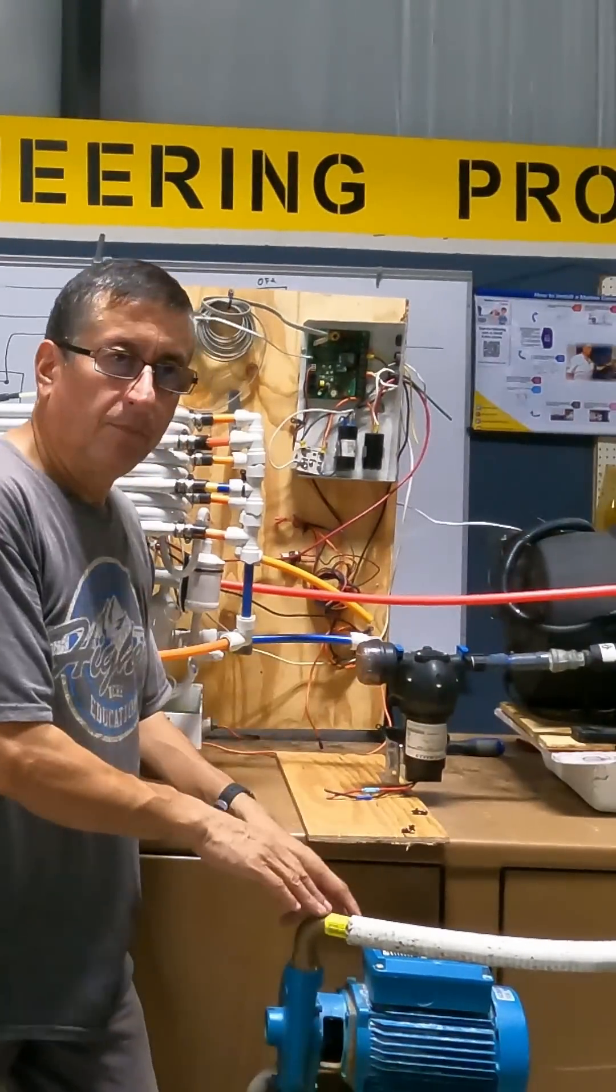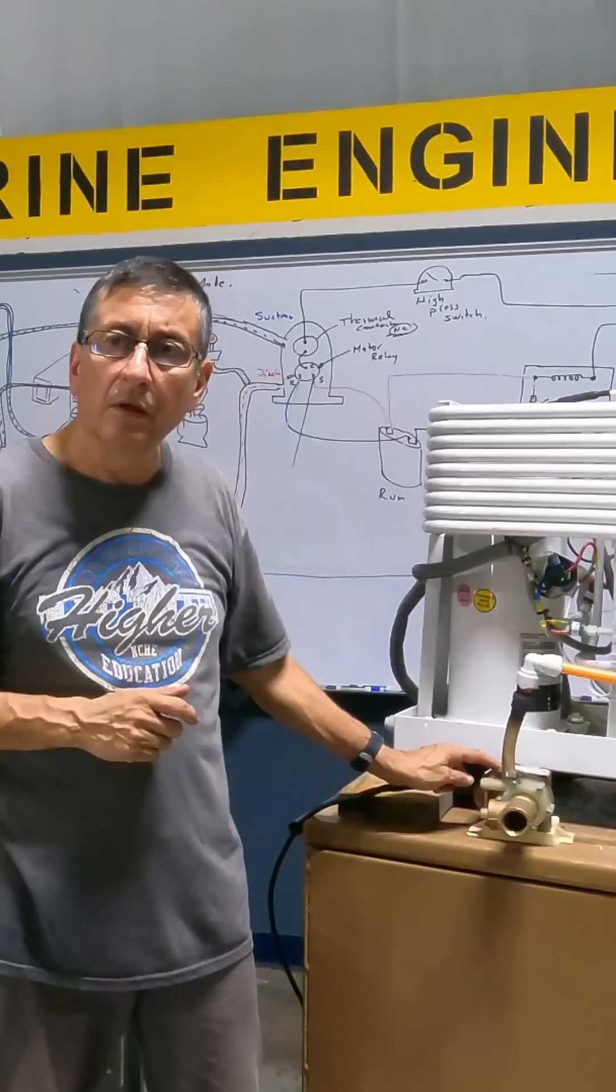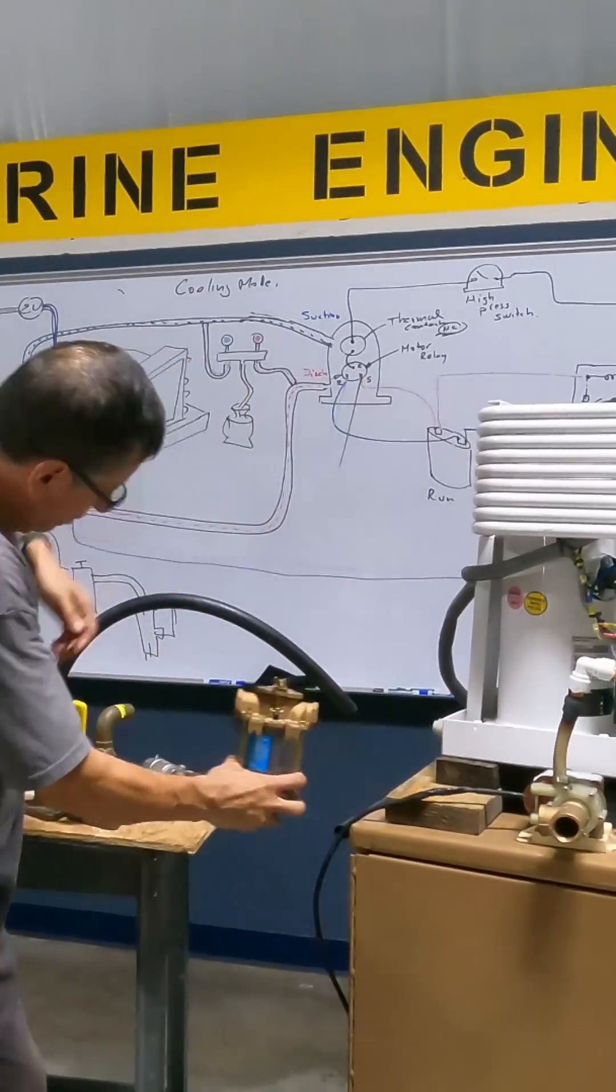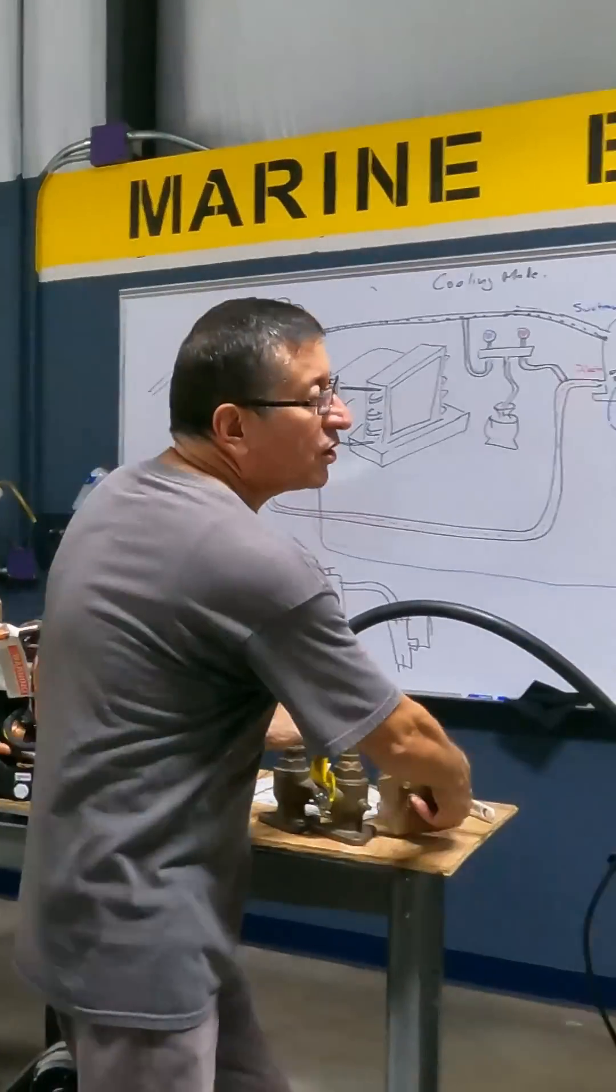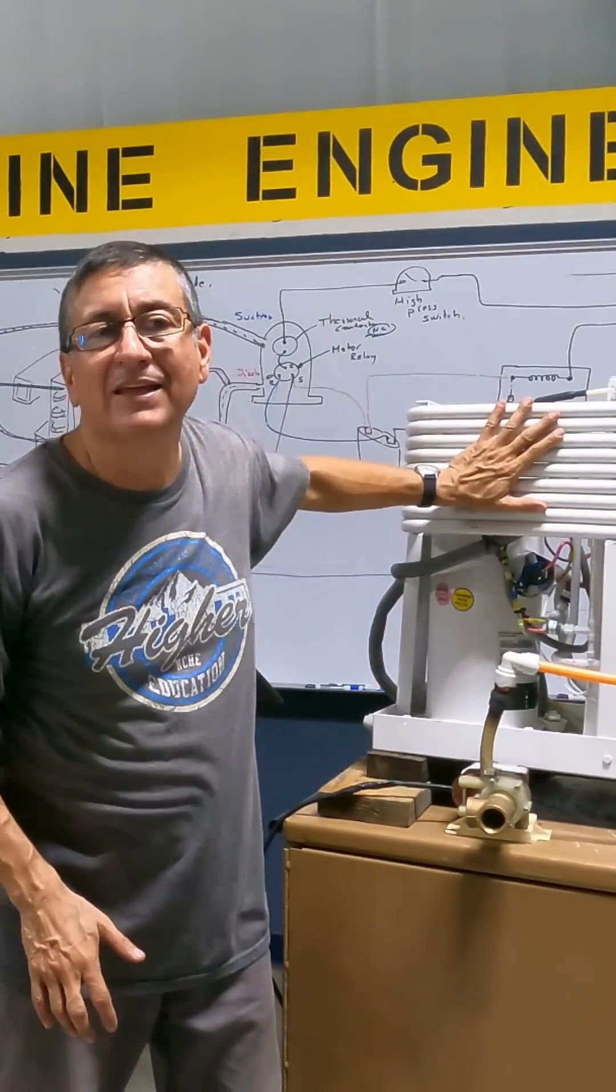Okay, this is the circulating pump. And what about this pump? That's your raw water pump coming from the strainer and coming from the seacock. This is the raw water pump exclusive for the coil of the condenser.